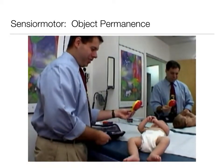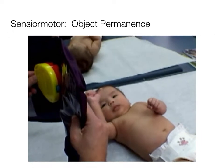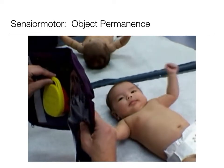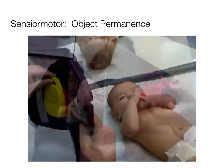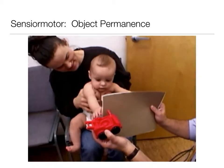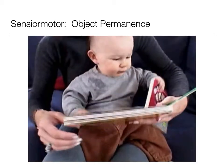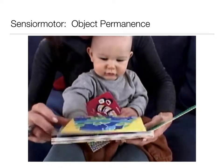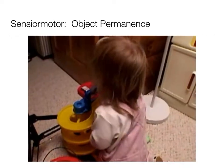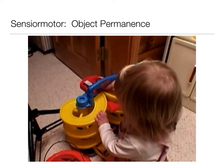The development of object permanence is one of the more notable cognitive changes during the sensorimotor period. Children younger than about four months are unaware that objects continue to exist when no longer visible. Between four and eight months, infants begin to retrieve partially hidden objects. By eight to twelve months, they consistently look for hidden objects. Twenty-month-old Tess reaches right around a barrier to get to a toy, showing she has achieved object permanence.